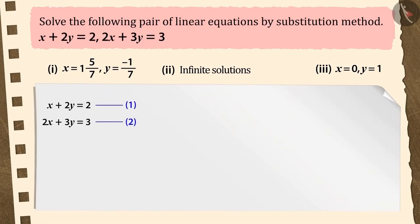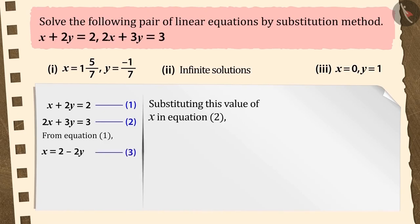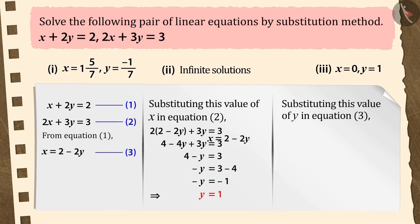To begin with, take equation 1 and express any one variable in terms of the other variable. By substituting the value of x in equation 2 and solving, we will get the value of y as 1. By substituting the value of y in equation 3, we get the value of x is equal to 0.